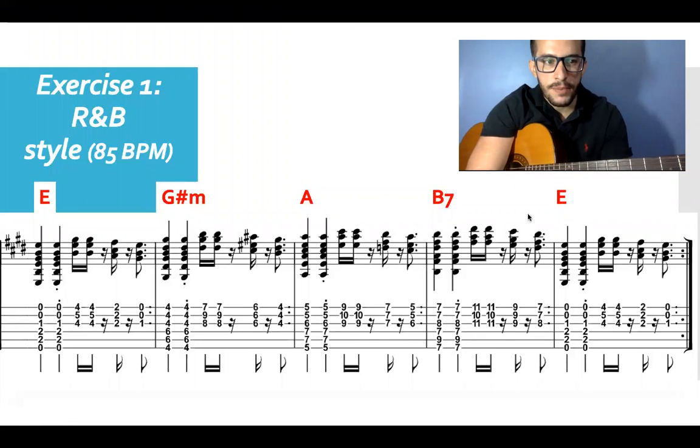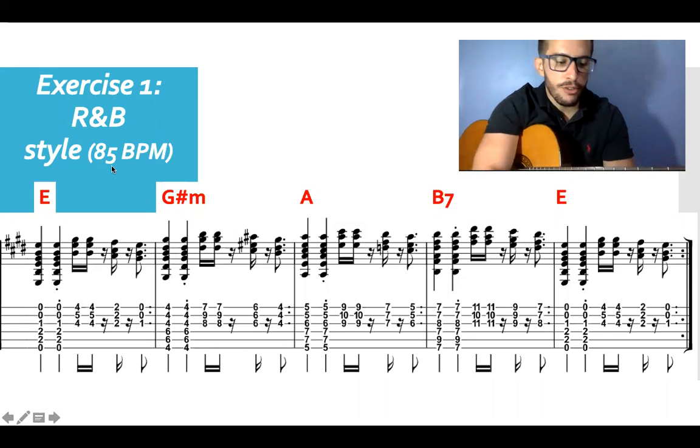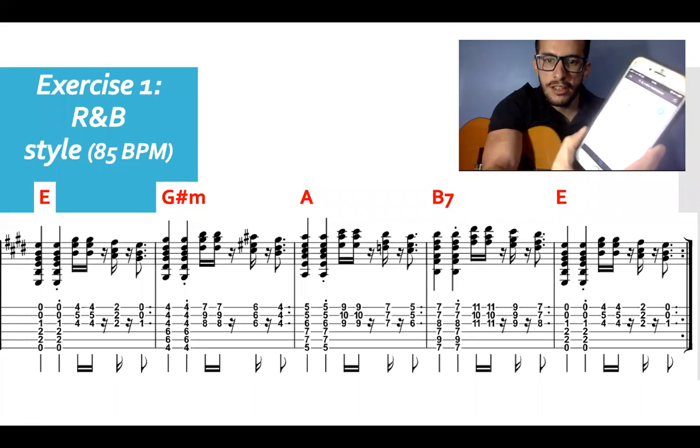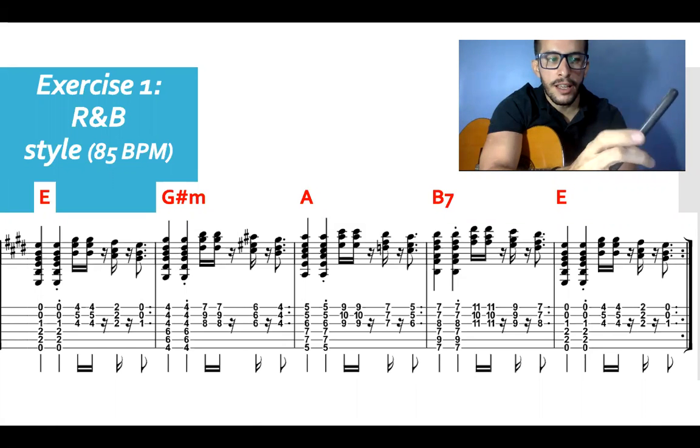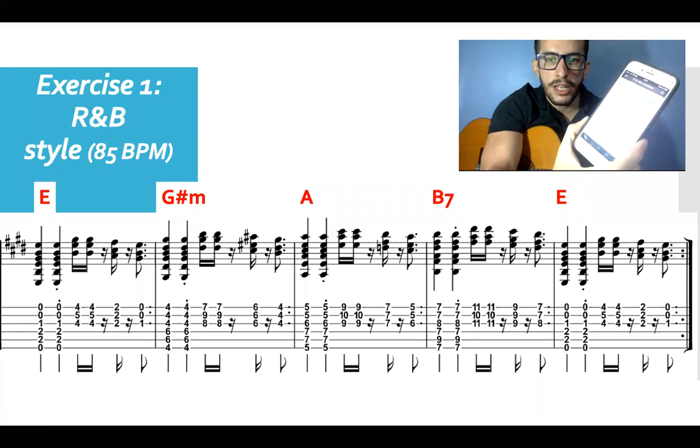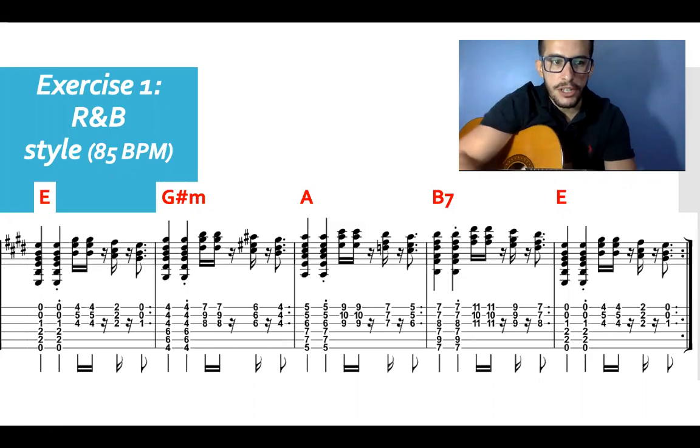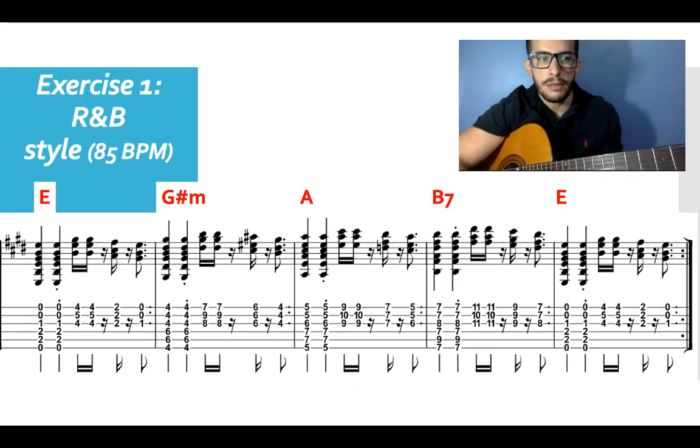The exercise that we have today is going to be in R&B style, at 85 BPM. If you go to your metronome you will type in 85. There you go and you will simply click play and you'll get 85 BPM. We're going to stop it for now and let me just explain what the exercise is going to be about.